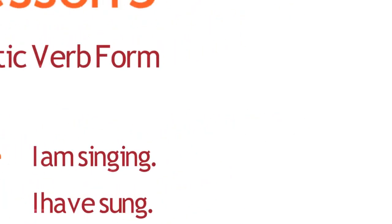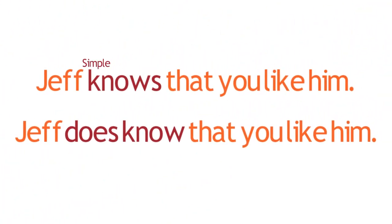As another example, compare these two sentences. The first sentence is simply an assertion that provides information about the subject, Jeff. In the second sentence, however, the use of the emphatic verb form strengthens this assertion, implying that the listener believes that Jeff doesn't know this information.